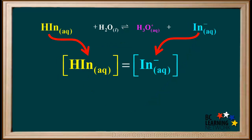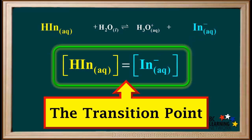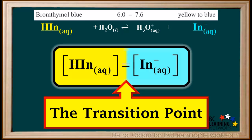For every indicator, there's a certain pH at which the concentration of the acid form HIn is just equal to the concentration of the base form In⁻. The pH value at which this occurs is different for each indicator. The point at which the concentration of HIn is just equal to the concentration of In⁻ is called the transition point. At the transition point, the color of the indicator will be the result of a 50-50 mixture of the two forms. In this example, which could be bromothymol blue, HIn is yellow and In⁻ is blue.